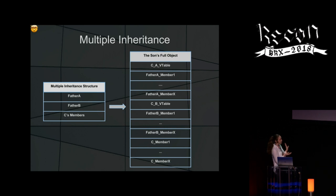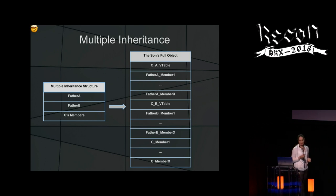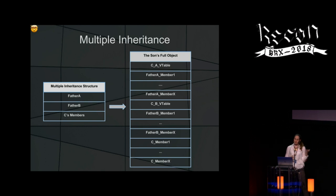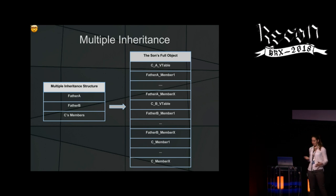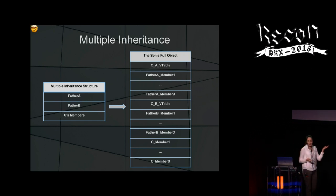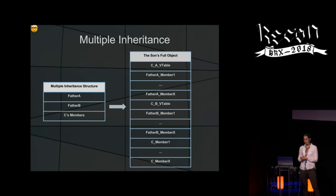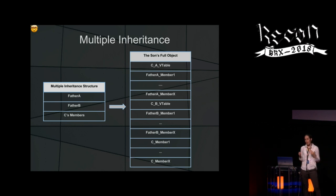This table shows how the multiple inheritance object is structured. Father A, the first inherited object, is created first. Afterwards father B, the second inherited object, is created. After both objects are created, you can also have C's own members. Opening it further: you have the Vtable of C as it inherits from A, then the Vtable of C as it inherits from B, and only after creating both objects do we add the members of C.